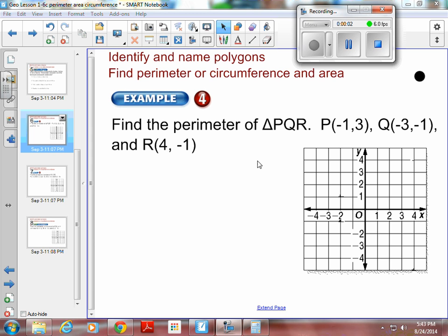Geometry, Chapter 1, Section 6. This is Example 4, the last one for this section. We want to find the perimeter of triangle PQR, and we're given our points here.